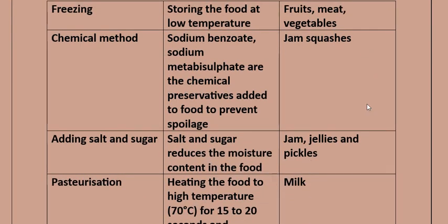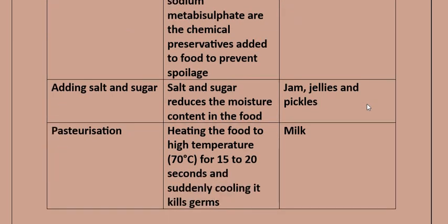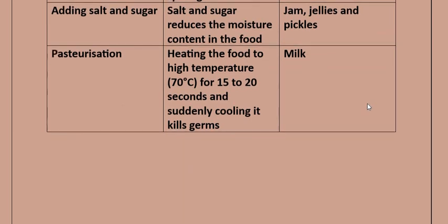Chemical method: sodium benzoate and sodium metabisulphate are chemical preservatives added to food to prevent spoilage, e.g., jams and squashes. Adding salt and sugar reduces moisture content in food, used in jams, jellies, and pickles. Pasteurization: heating food to high temperature (70 degrees Celsius for 15 to 20 seconds) and then suddenly cooling it kills germs, e.g., milk.